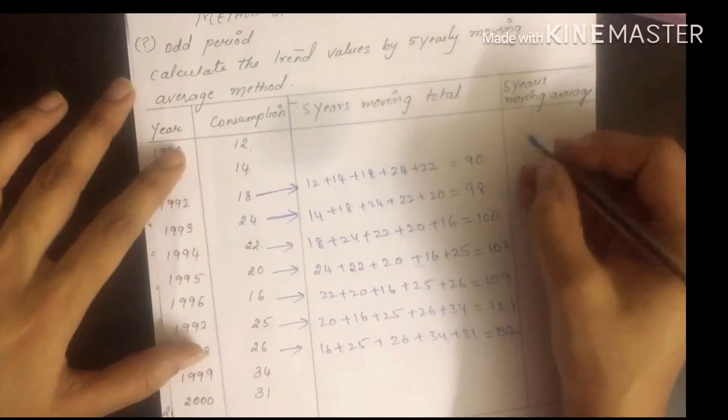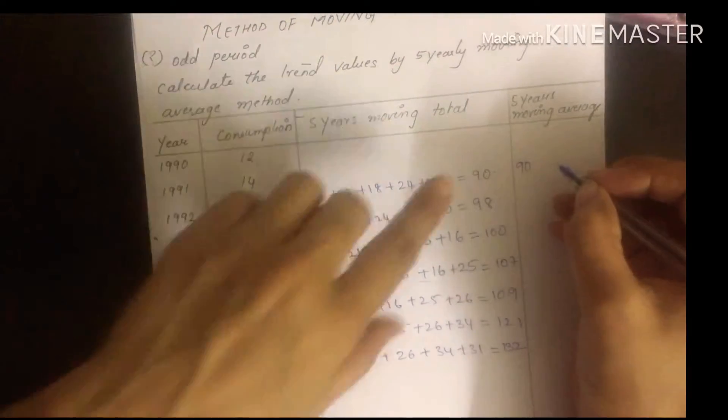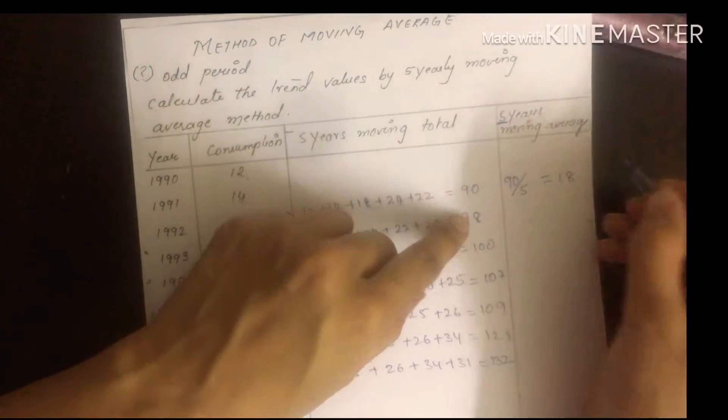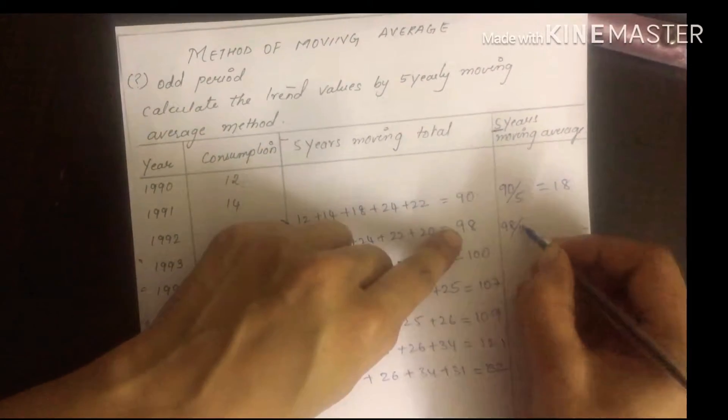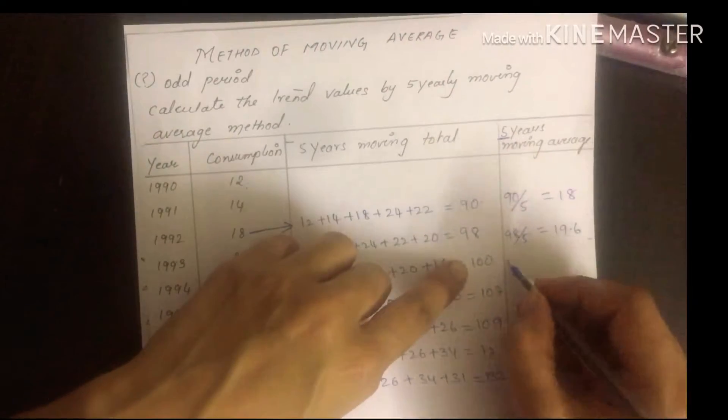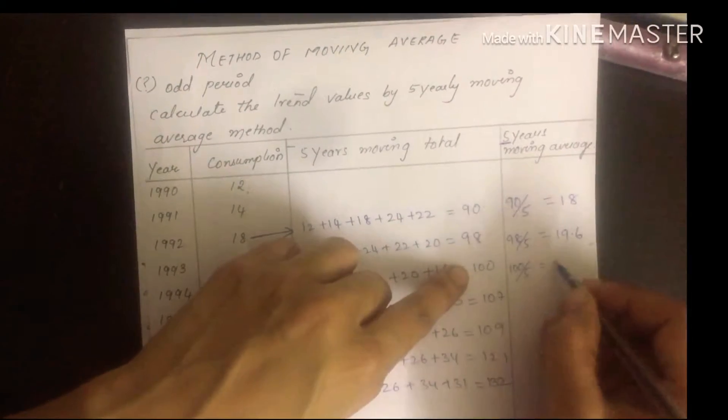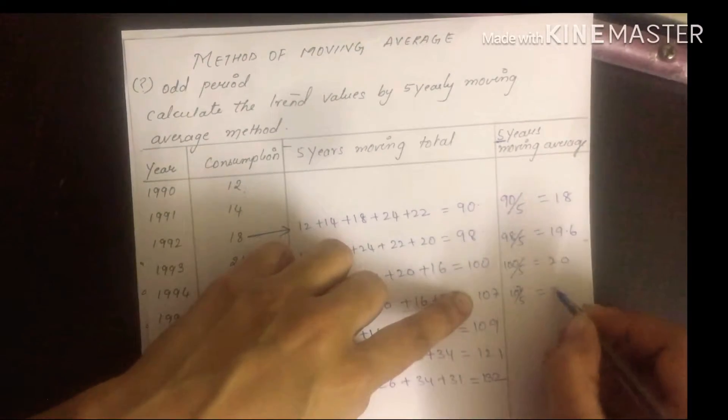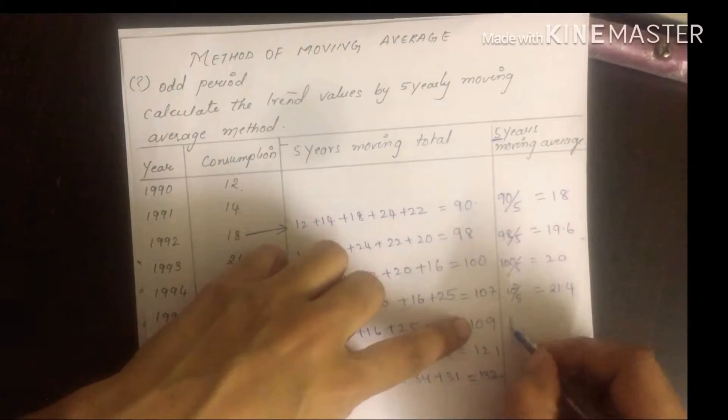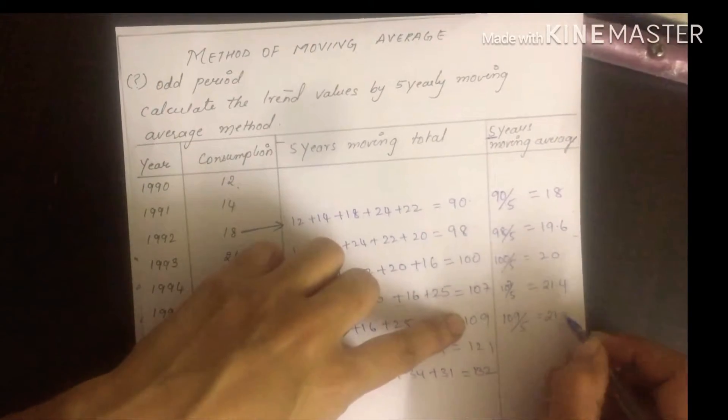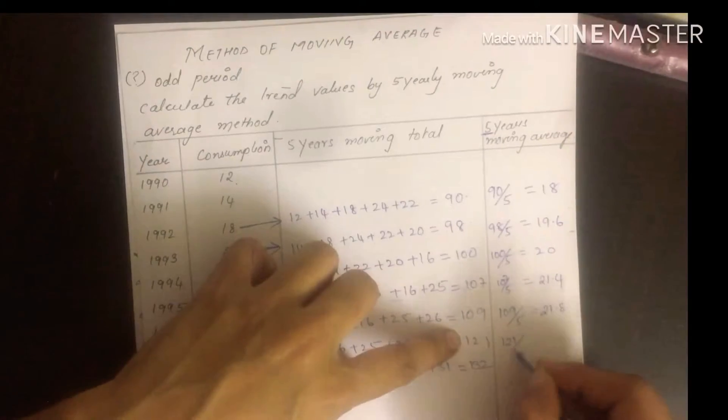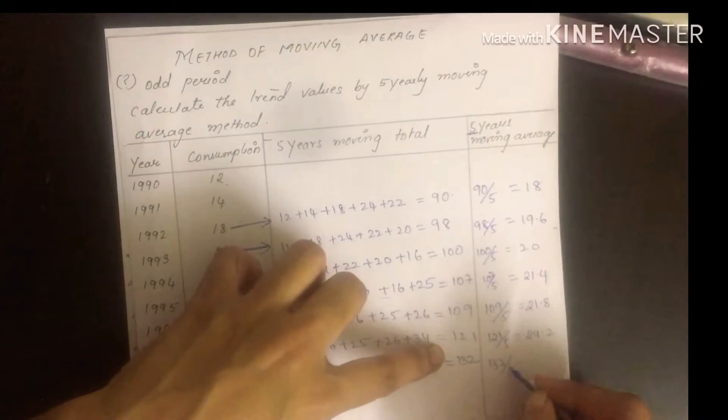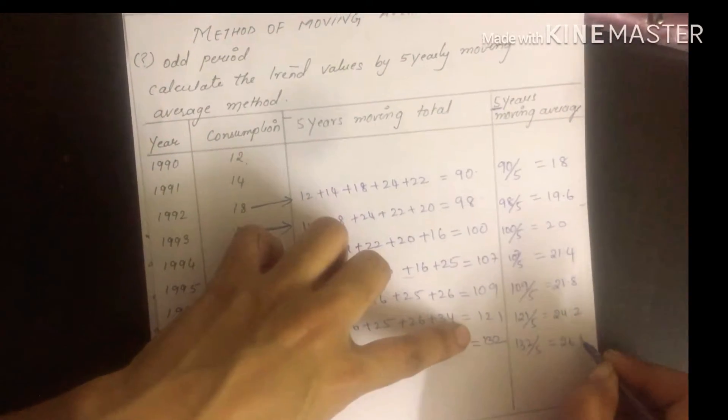Now we've done the total moving average. 90 divided by 5 - why 5? Because it's 5 years. 98 divided by 5. 100 divided by 5. 107 divided by 5. 109 divided by 5. 132 divided by 5 is 26.4.